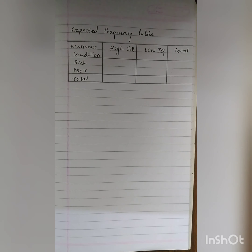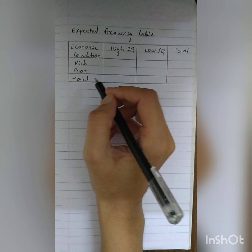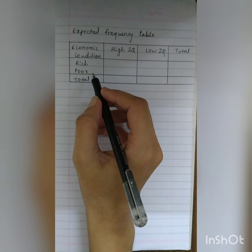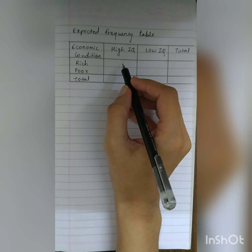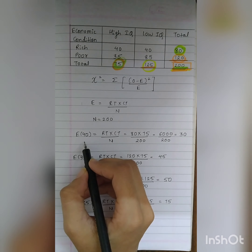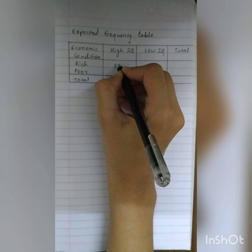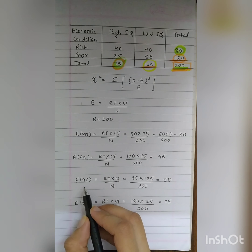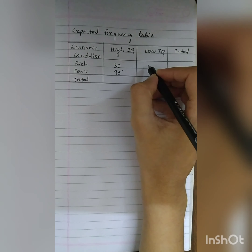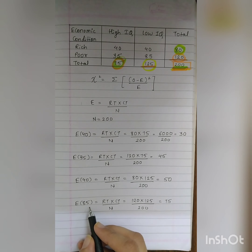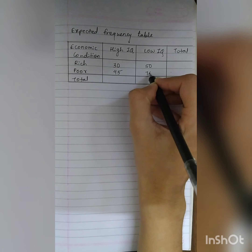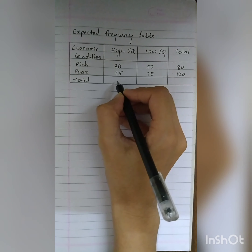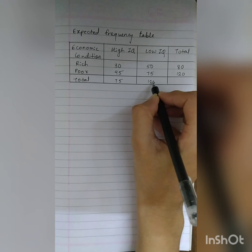Now make the expected frequency table with columns: economic condition, high IQ, low IQ, and total. For rich: expected high IQ is 30, expected low IQ is 50. For poor: expected high IQ is 45, expected low IQ is 75. Totals: 30 plus 50 is 80; 45 plus 75 is 120; column totals are 75 and 125; grand total is 200.